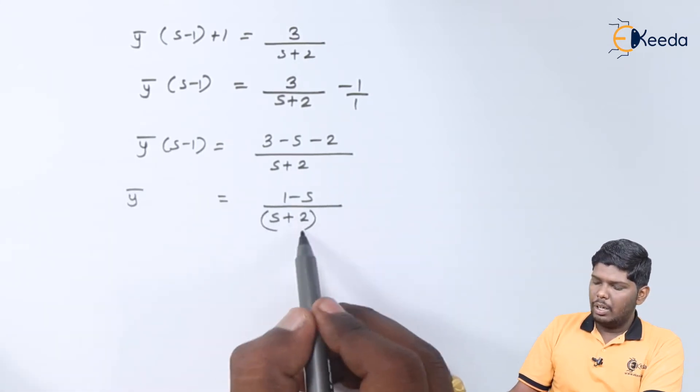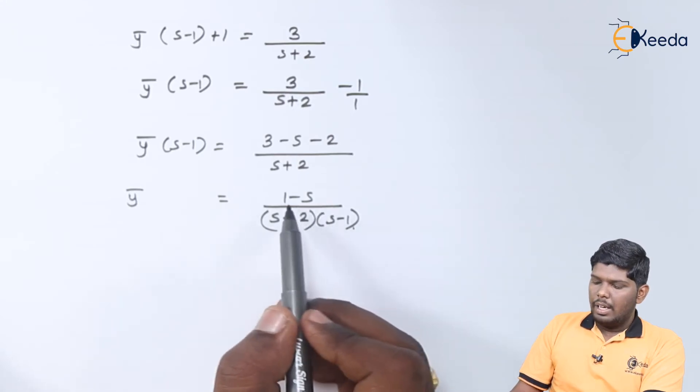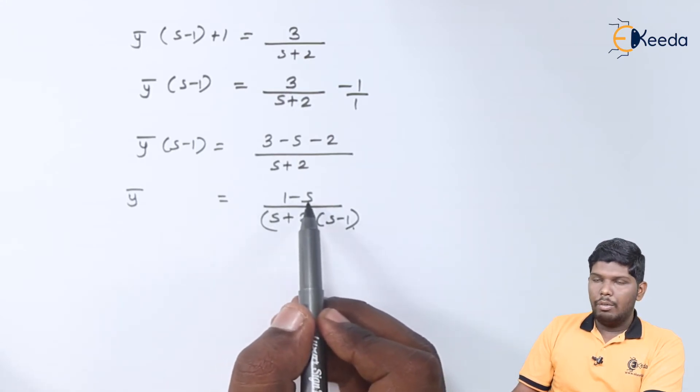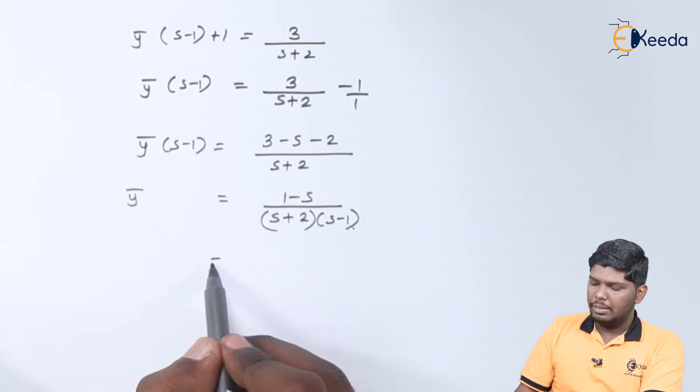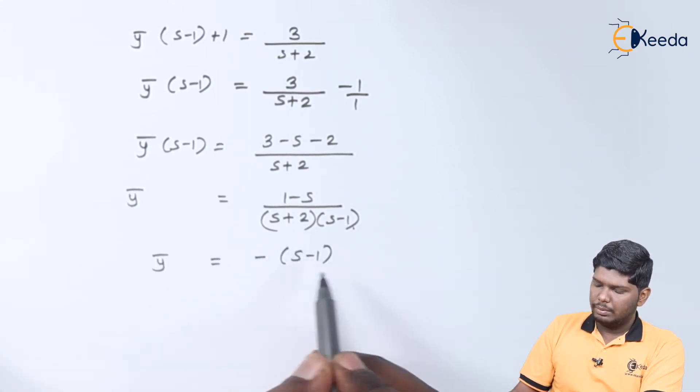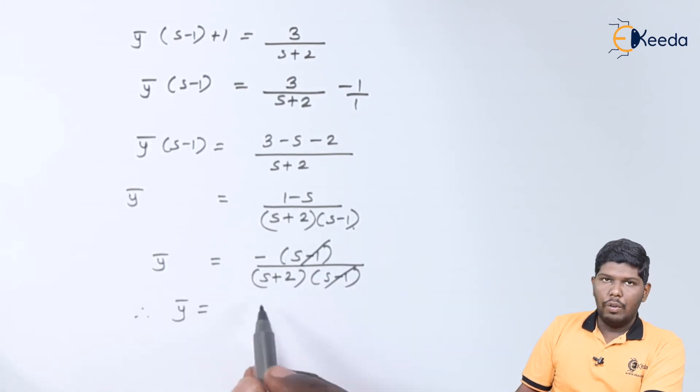So this s minus 1 will be divided on the right hand side. If you take minus sign common, here we will get s minus 1, with that s minus 1 in the denominator will be cancelled. Therefore, y bar will be minus 1 upon s plus 2.